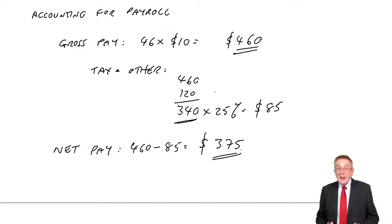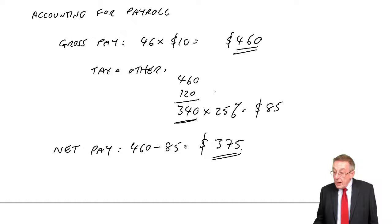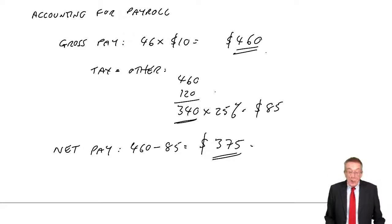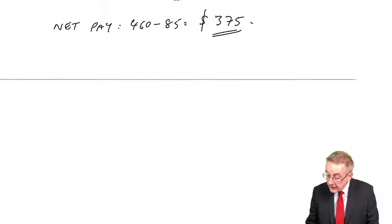So gross pay is what they've earned. Net pay is the cash that's actually paid to them. Now that $85 that was subtracted by the employer, the employer will have to pay to the state. And it says, what's the total amount that will have to be paid by the employer to the tax authorities?